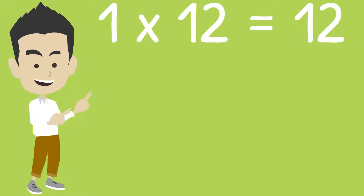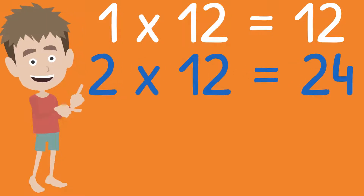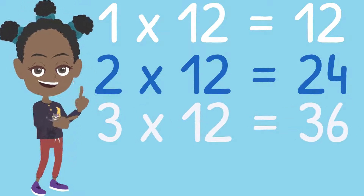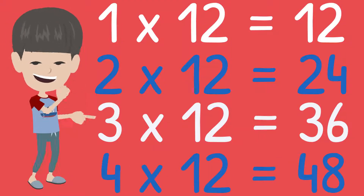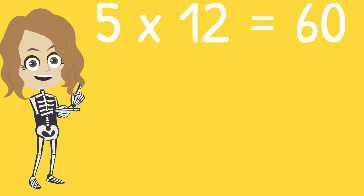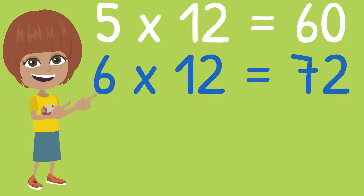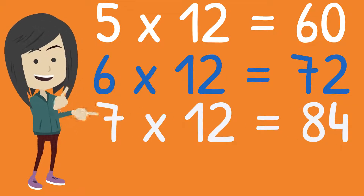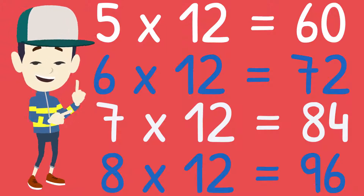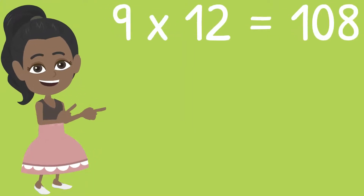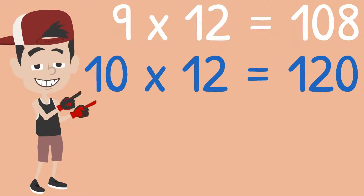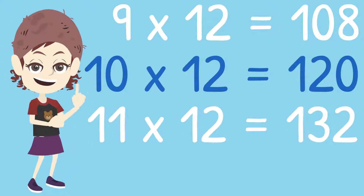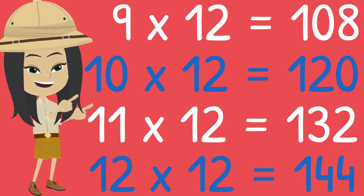1 twelve is 12, 2 twelves are 24, 3 twelves are 36, 4 twelves are 48, 5 twelves are 60, 6 twelves are 72, 7 twelves are 84, 8 twelves are 96, 9 twelves are 108, 10 twelves are 120, 11 twelves are 132, 12 twelves are 144.